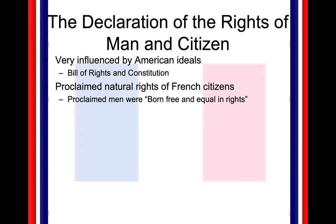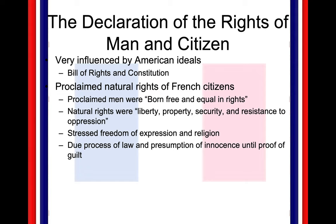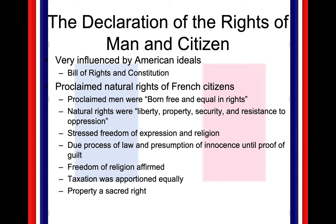In the Declaration of the Rights of Man and Citizen: men are born free and equal in rights; natural rights include liberty, property, security, and resistance to oppression — that's John Locke. Freedom of expression and religion — that's Voltaire. Due process of law, innocence until proof of guilt — that's Beccaria. Freedom of religion, equal taxation, property as a sacred right — the Enlightenment in action in France. Very important.